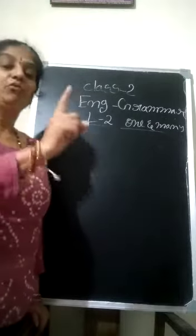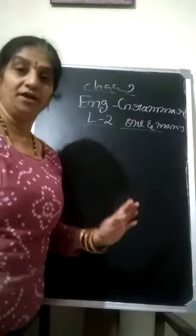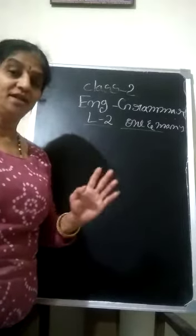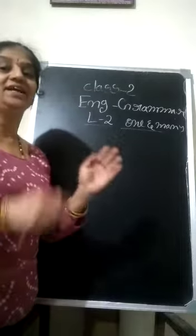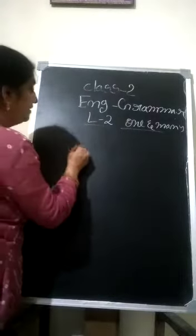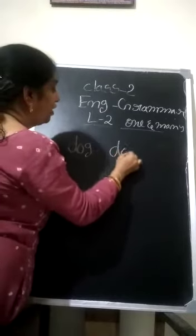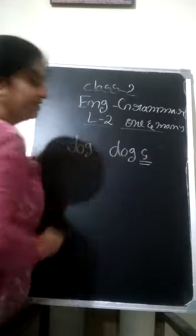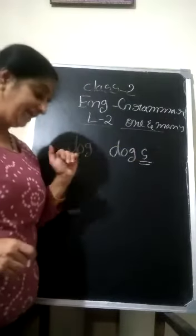For example, if one dog is there, we call it as dog. If two dogs are there, we call it as dogs. We are adding S for that. Dog. Dogs. We are adding S here. Dog. Dogs. Like that.